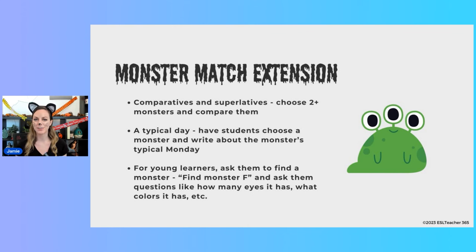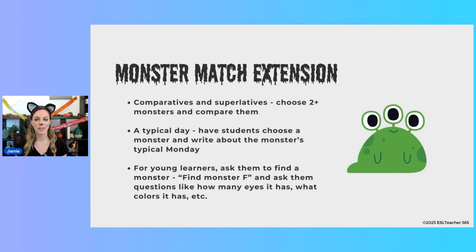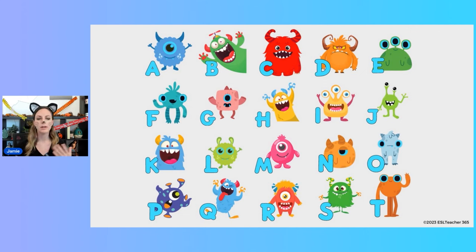You can also create a writing task: after they've chosen their monster, have them write about their monster's typical Monday. If you have young learners, you can still use this same game board — have them find a monster, for example find monster F, and then ask them questions like how many eyes does your monster have? They could locate monster F and tell you it has two eyes. This is good for practicing body parts or colors, and you can use the same game board in a few different ways.